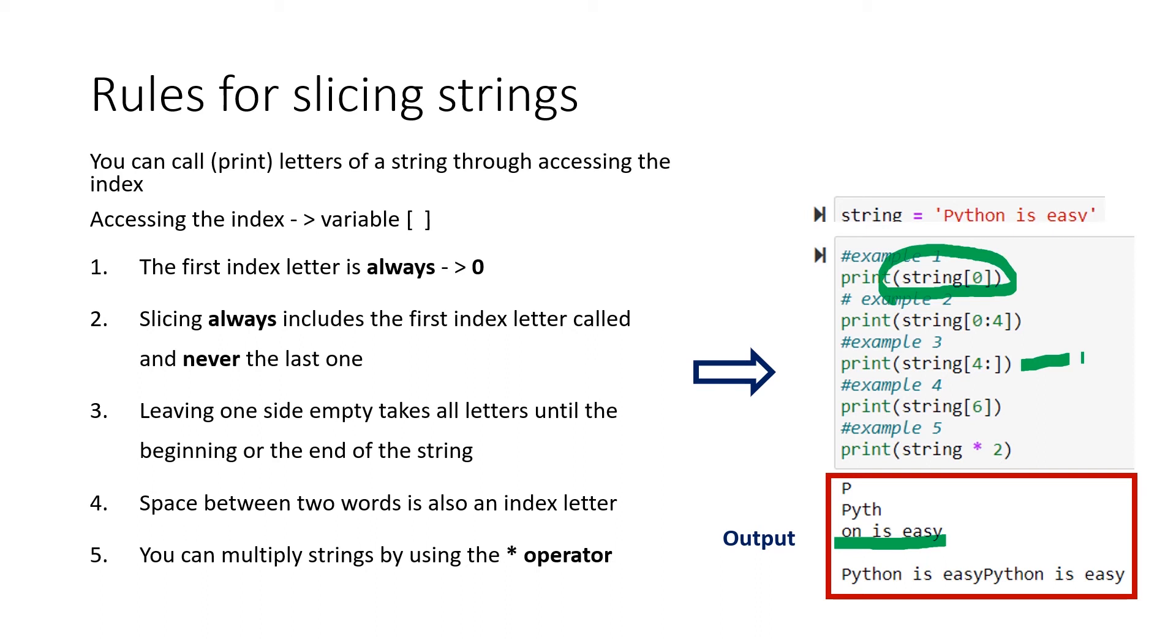A space between two words is always an index letter, meaning that if you have a space as we have it here, and you call the index of that specific space, you will get nothing as an output because you cannot really see a space.